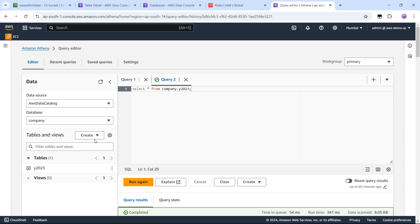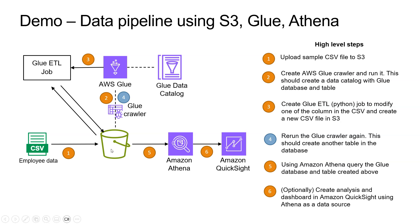That was one outcome we wanted, but we are not done yet — we have done only half the work. Going back to our architecture: we have the data catalog in Glue and can query the data from S3 using Athena. But now we want to change the data in the CSV, increase the salary by 10 percent, and store the new data in the year 2024 folder. For that we need to create a Glue ETL job and write the business logic to change the salary — and for that you need to write a Python script.